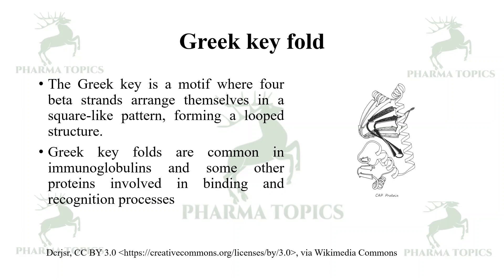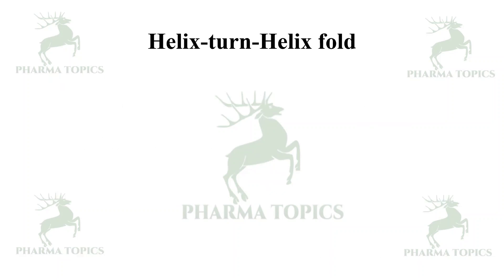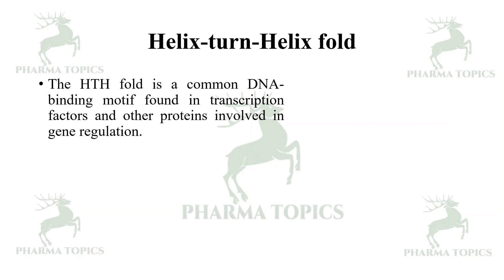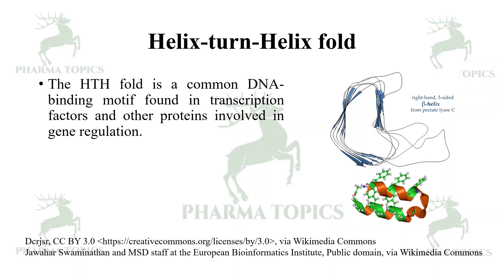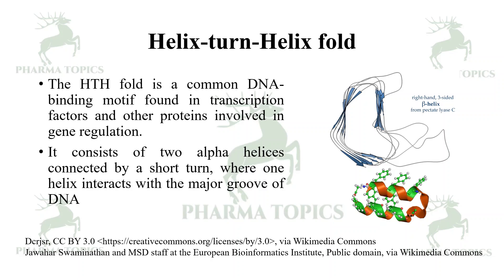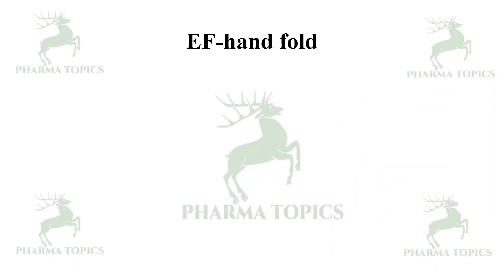The helix-turn-helix (HTH) fold is a common DNA-binding motif found in transcription factors and other proteins involved in gene regulation. It consists of two alpha helices connected by a short turn, where one helix interacts with the major groove of the DNA.